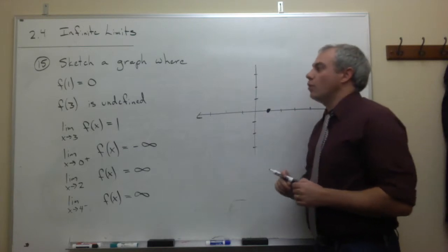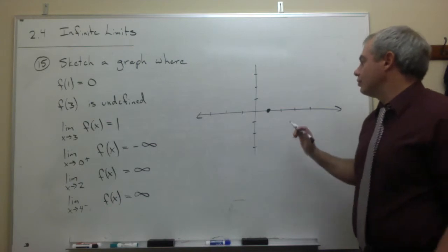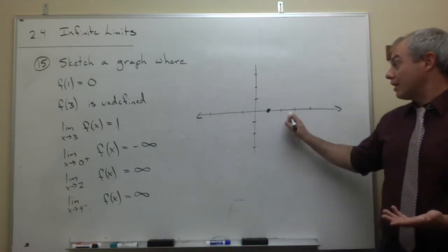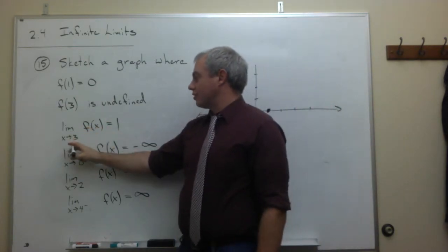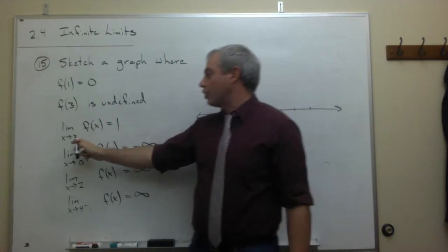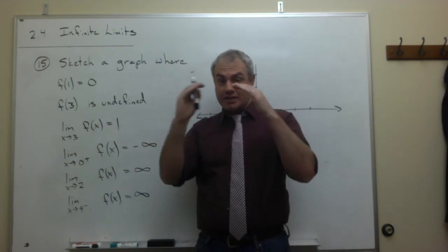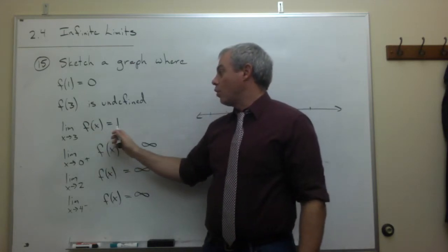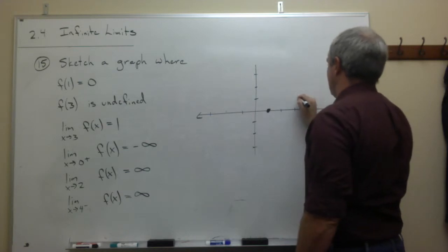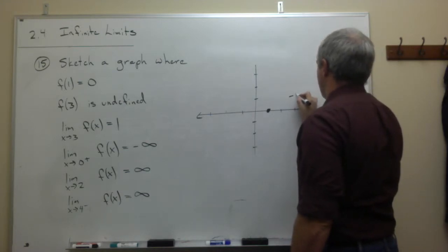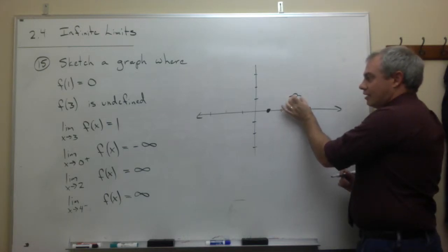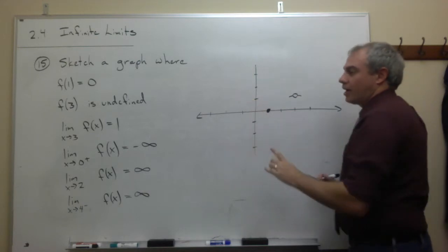The second condition is f(3) needs to be undefined. There's nothing really to draw for that — it just means at x = 3 there's no point above or below. The third condition is the limit as x goes to 3 of f(x) needs to be 1. Notice this isn't a one-sided limit — coming at 3 from the left and the right, they both need to look like they're ending up at y = 1. So I'll fill in an open hole here at (3, 1), since there's no functional value at 3, but the graph needs to approach y = 1 from both sides.